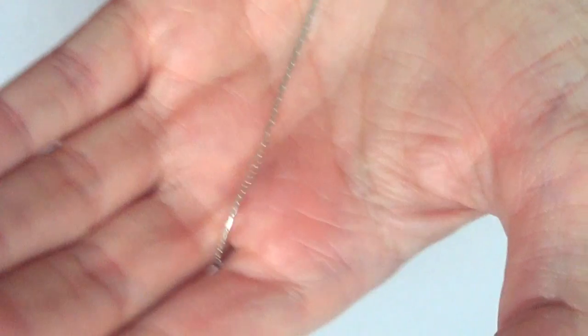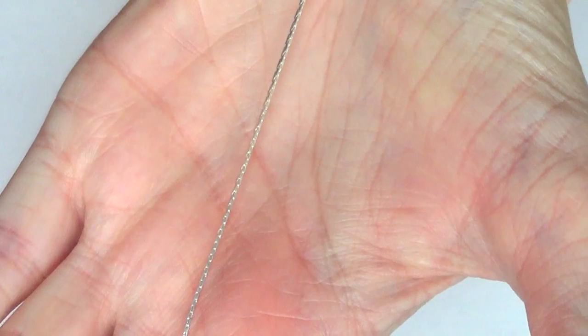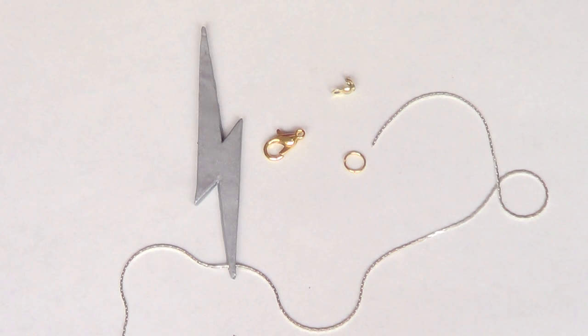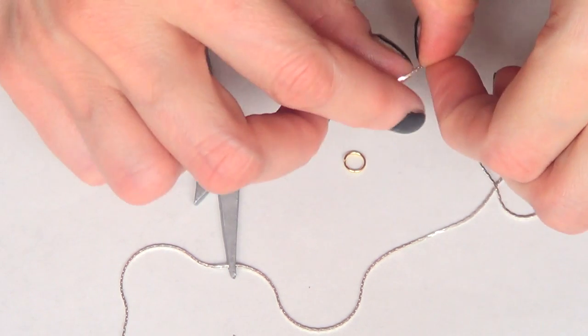I'm going to let the whole thing dry. Then to make this necklace, I'm going to take a real thin chain and place it through the small hole that I made before.